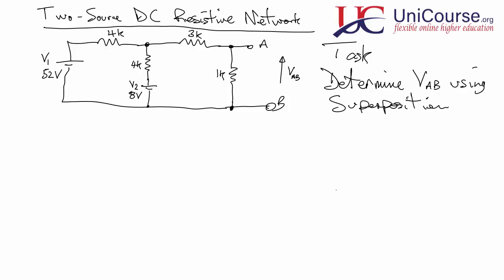We have two DC voltage sources, and we need to determine the contribution from V1 solely — replacing V2 with a short — then find the voltage between A and B due to V1 alone. Then we replace V1 with a short and put V2 back in, determine the contribution from V2, add the two contributions together, and superpose those figures to get the actual voltage VAB.